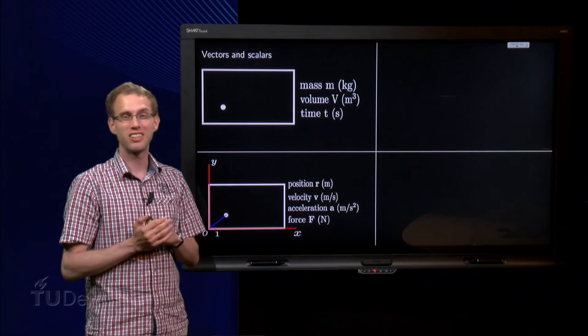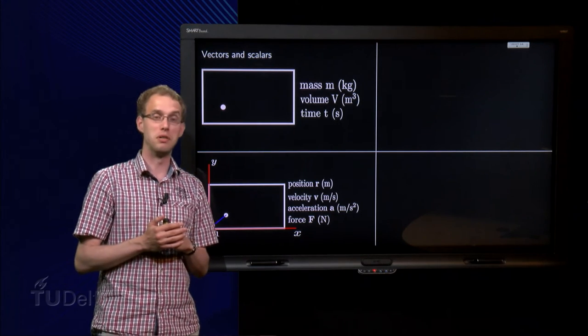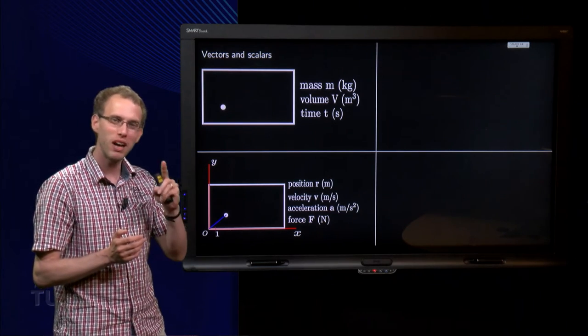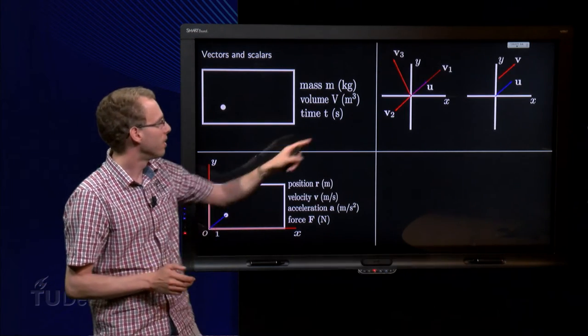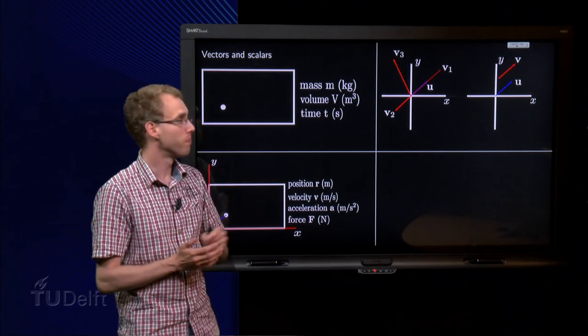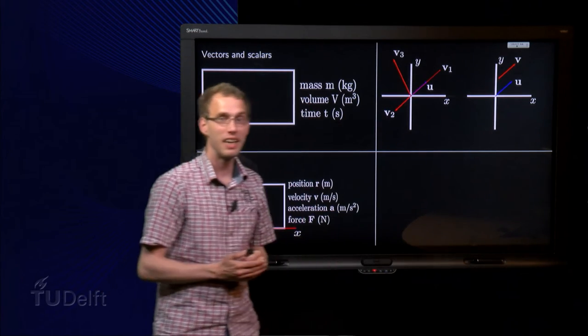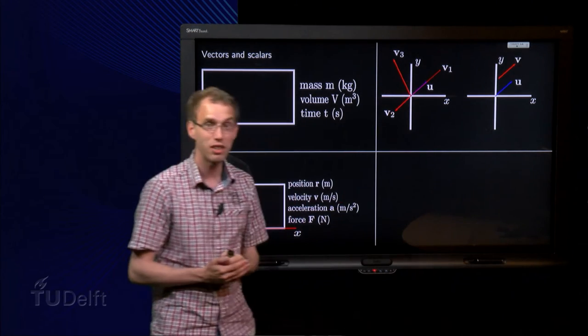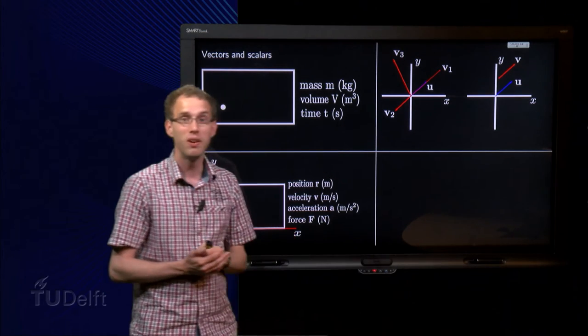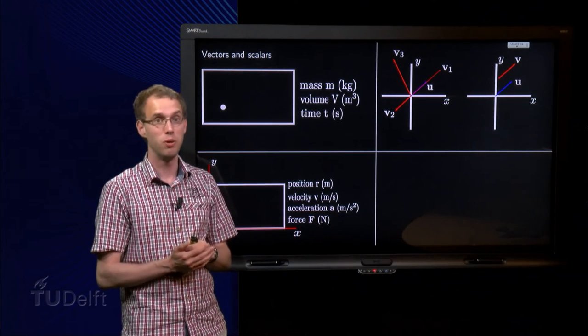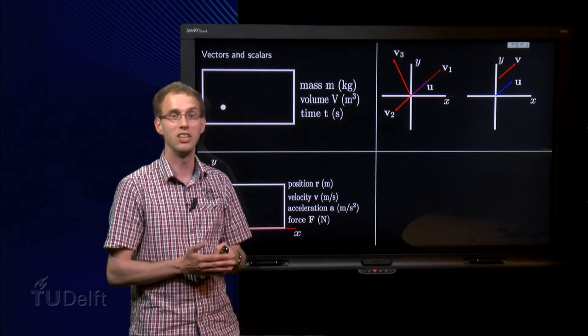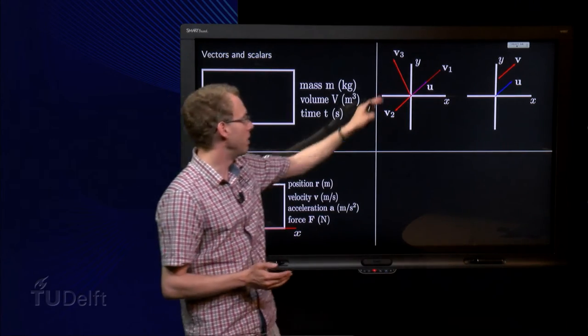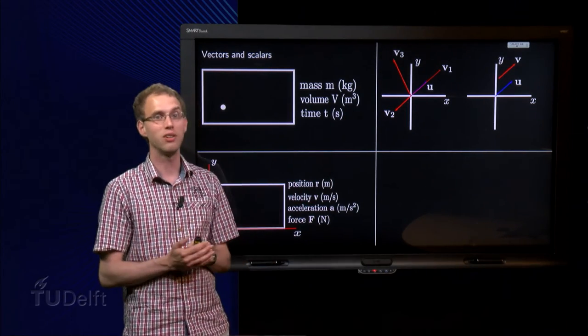So when do we call two vectors the same? Well this seems really trivial. Well it is not as trivial as you might think on first sight. Here we have our vector u. Vector v1 is in the same direction, but does not have the same size, so v1 is not equal to u. V2 has the same magnitude as u, but is in another direction, in fact the opposite direction, so v2 is also not equal to u. And v3, ok that is a complete mess, that one is obviously not equal to u.